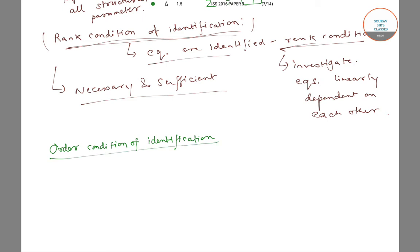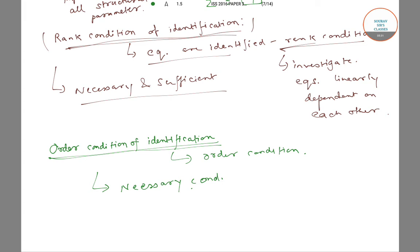The next one is the order condition for identification. Here, the decision rule for identification is the order condition. This is a necessary condition — it is not sufficient, but only necessary. This rule, the order condition of identification, is more popular than the rank condition of identification, though it is only the necessary condition and not the sufficient condition.